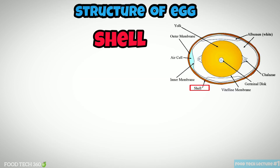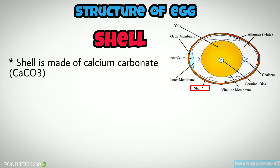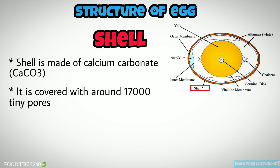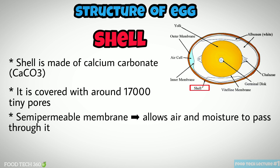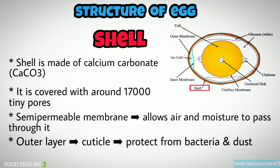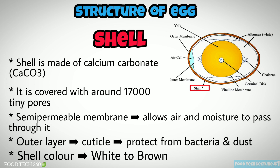The shell is mainly made up of calcium carbonate. It is covered with around 17,000 tiny pores. It is a semi-permeable membrane which allows air and moisture to pass through its pores. The shell also contains a thin outer coating called the cuticle, which helps to protect the egg from bacteria and dust. The color of the eggshell can vary from white to brown.